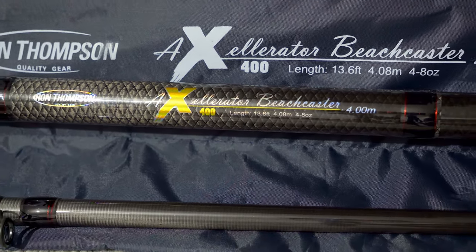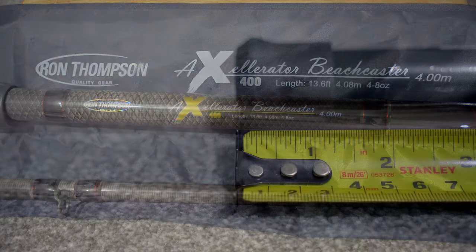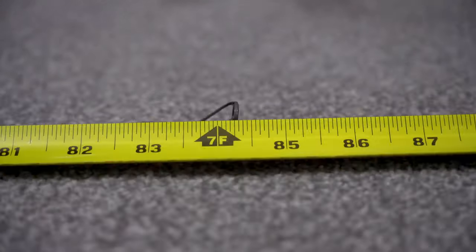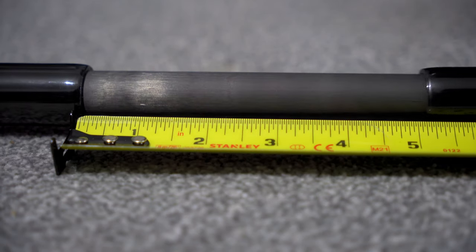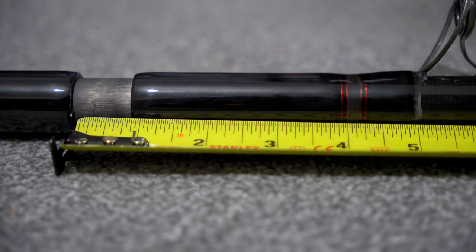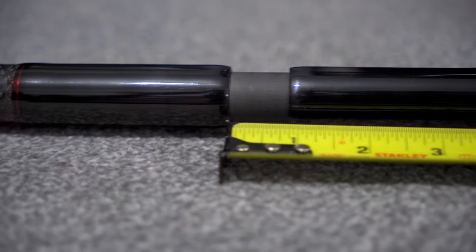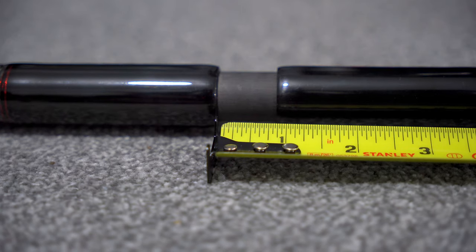It comes as a 2 piece rod with the butt section measuring short of 78.25 inches and the upper section measuring a little over 84.25 inches, just a little over 7 feet. The spigot is almost 5.5 inches long with almost an inch left exposed when the rod is assembled. An allowance as spigots do tend to wear down during assembly and disassembly.